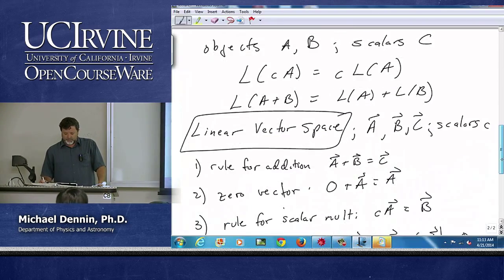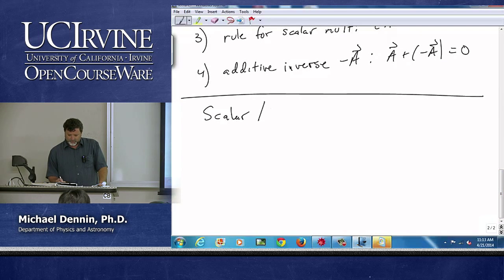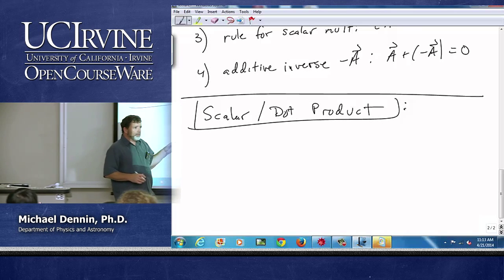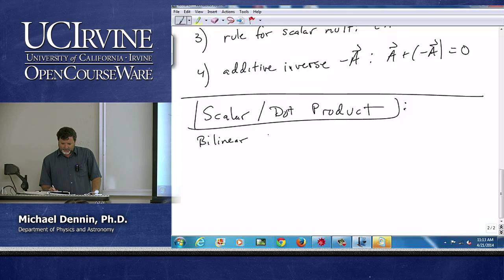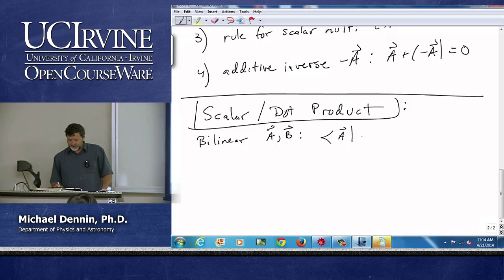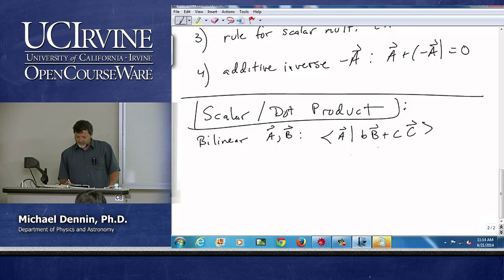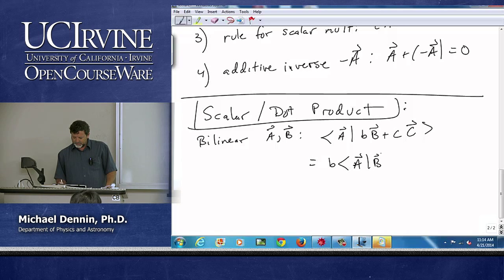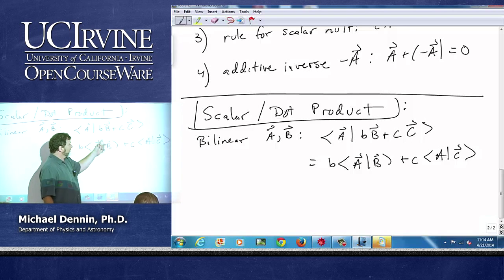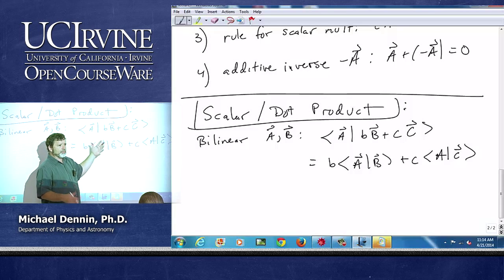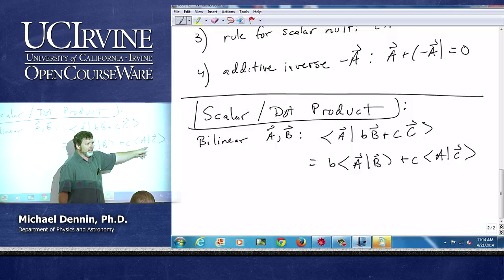We did linear operator, we did linear vector space, and now we add the scalar or dot product. Now, in this class, we don't worry too much about its formal definition. But again, it has, just like with linear vector space and linear operators, it has some formal things. It's what we call bilinear in the vectors A and B. So that means A acting on little b times B plus little c times C equals bAB plus cAC. So this is what it means to be bilinear. There's two vectors here. It's basically the distributive property. I've built in a bunch of things into this: A on B plus C is AB plus AC, but the scalar multiplication works. And it also works if I had A plus B over here on C.